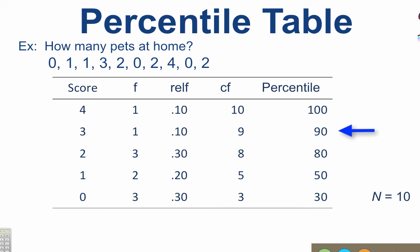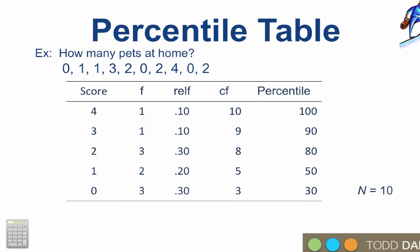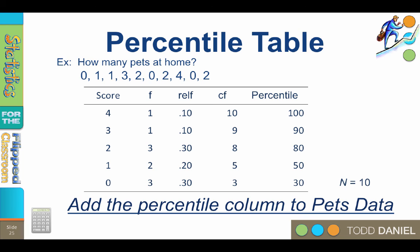Working down the percentile column, 9 divided by 10 equals 0.90 times 100 equals 90. 8 divided by 10 equals 0.80 times 100 equals 80. 5 divided by 10 times 100 equals 50. 3 divided by 10 times 100 equals 30. Go ahead and complete the table in your notes if any of these numbers are still missing.